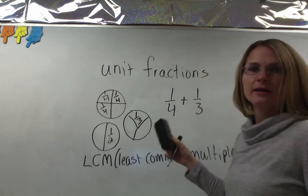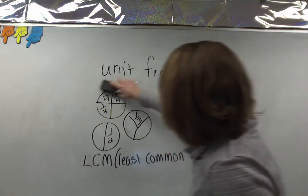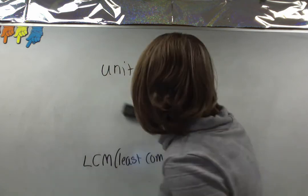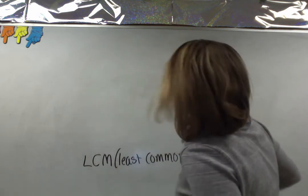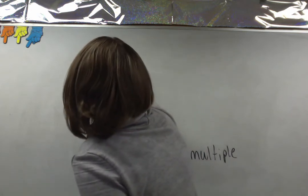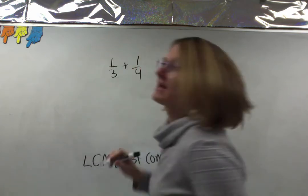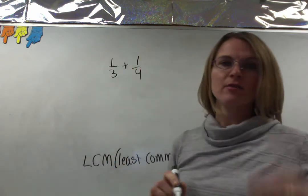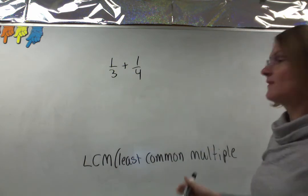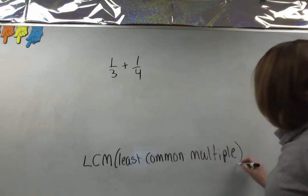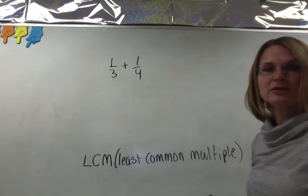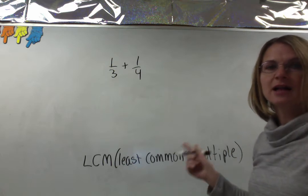So we had one third plus one fourth. We cannot add them together the way they are because the denominators aren't the same. We're going to find something about them that is the same by using their multiples and finding the least common multiple.